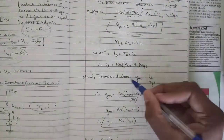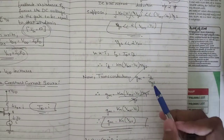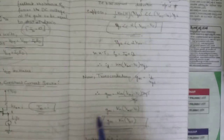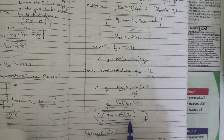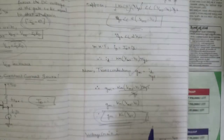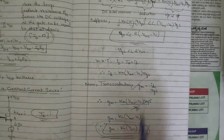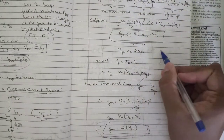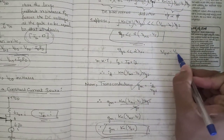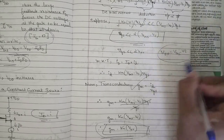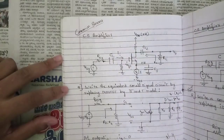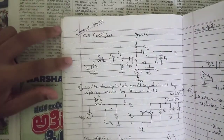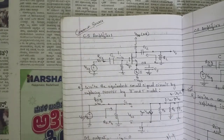The derivation of transconductance is important: gm = ΔID / ΔVGS. The relationship between transconductance and overdrive voltage VOV is also key, where VOV = VGS − Vt. Please note this down as it is needed when solving problems.